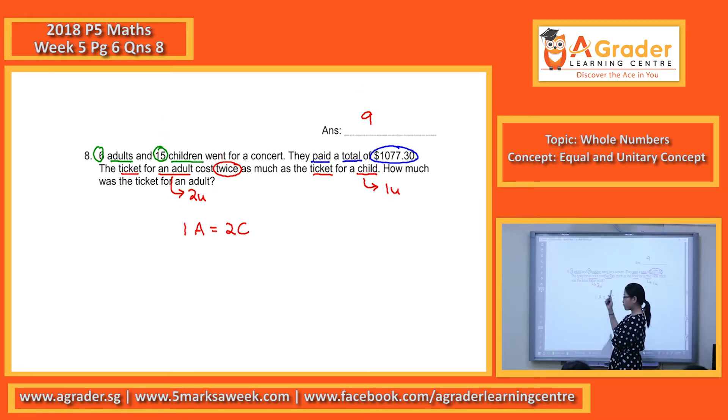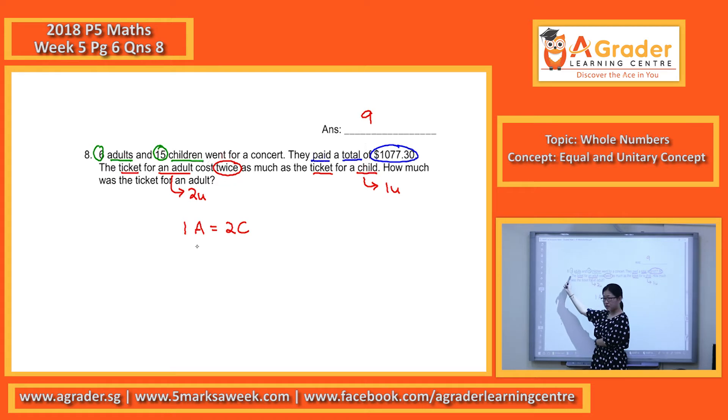How do you get 1 adult to become 6 adults? 1 times 6. Okay, so it's times 6 over here, means the whole thing will also times 6. So 6 adults equals 12 children.